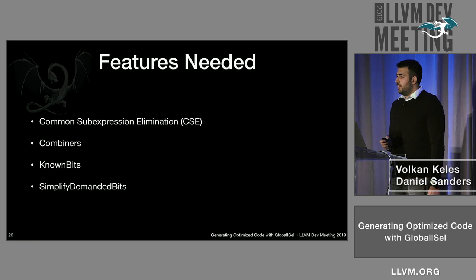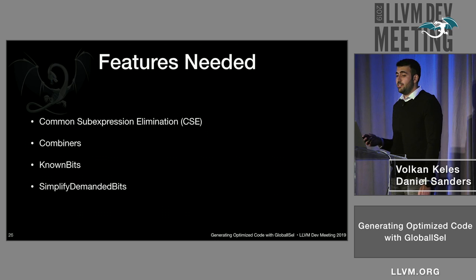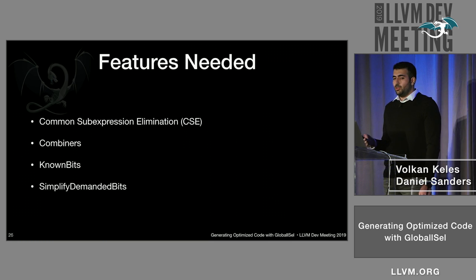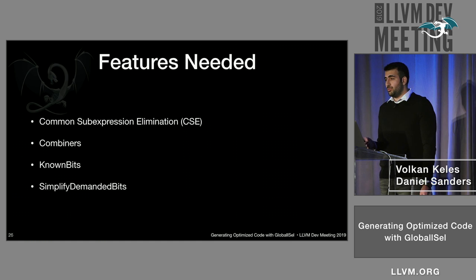In order to generate better code, we needed a few things: common subexpression elimination (CSE), combiners, known bits, and simplified demanded bits. We needed these features to improve code gen quality, but at the same time we also wanted to improve compile time performance.